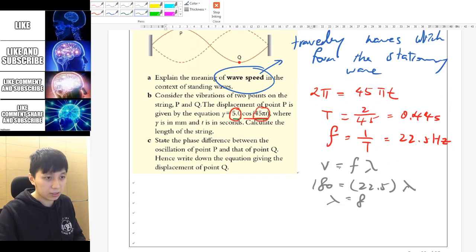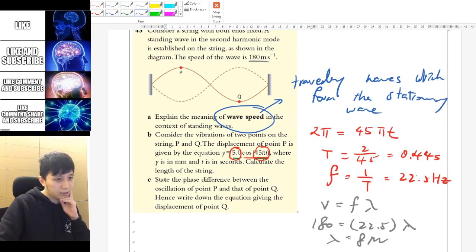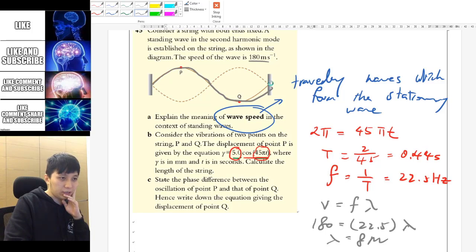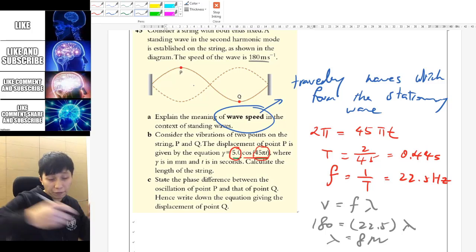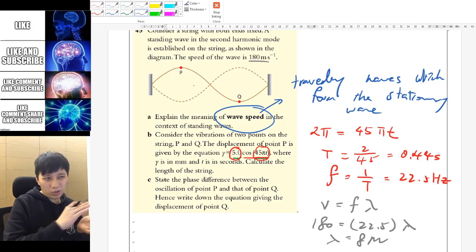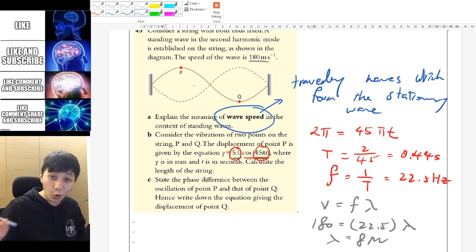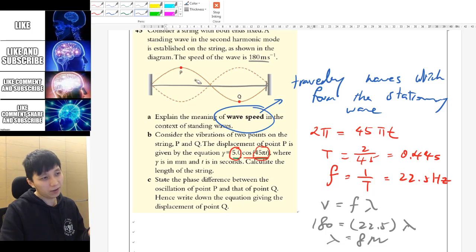So v equals to f lambda, v is given to be 180, and frequency as we calculated, then we can find the lambda. So lambda would be 8 simply. So it should be 8 meter. You may argue that, hey, the string, I mean from the diagram, it appears to be a curve. So if you try to straighten it, it should be longer. So I guess here we have ignored it. Sorry, this is physics. So since we know the wavelength is going to be 8 meter, then we just take this as the length of the string. So that's the assumption that we have made here.